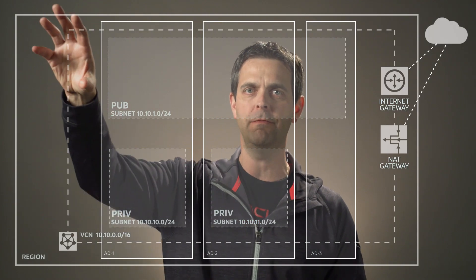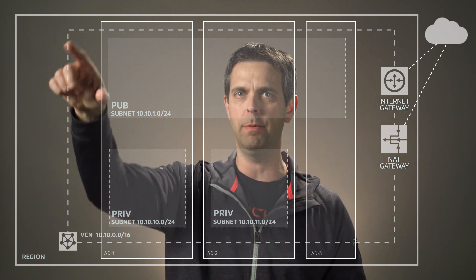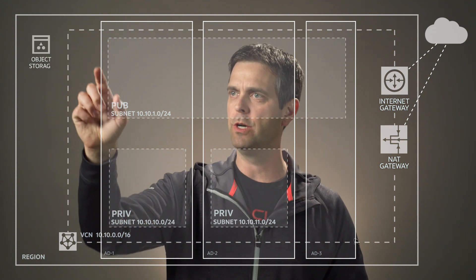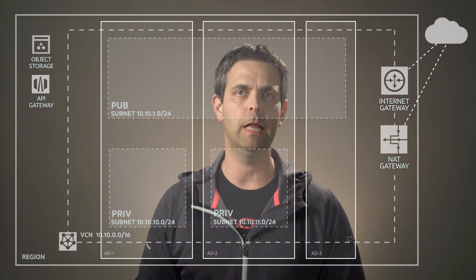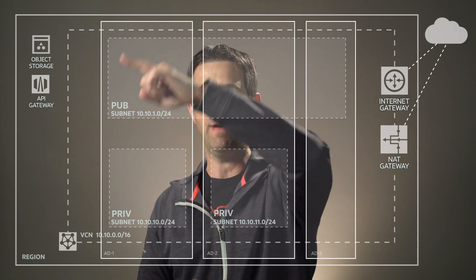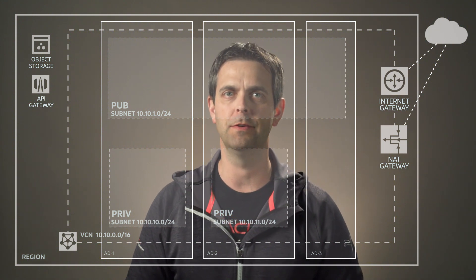Now on the other side over here we have an object storage bucket, an API gateway, and a few other public services. These are things that exist in our Oracle Cloud regions, but they exist outside of your virtual cloud network.